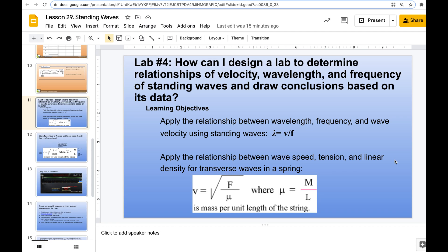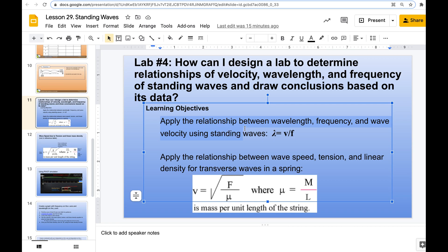We're going to be using some equations we've learned already, mostly applying the relationship between wavelength, frequency, and wave velocity using this equation. We've seen this equation before in the reference table, except we've seen it as velocity equals frequency times wavelength. They've just rewrote it like this. And then the other part is we're going to apply two new equations that we haven't learned and are not in your reference table. And so that has to do with wave speed, tension, and linear density for transverse waves in a spring or in a rope or cord.